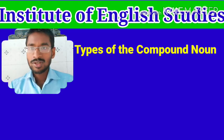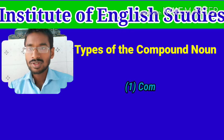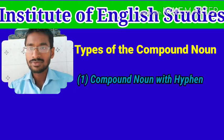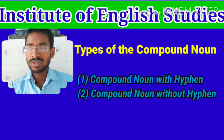Types of compound noun: there are two types of compound noun — first one is compound noun with hyphen, and the second one is compound noun without hyphen.